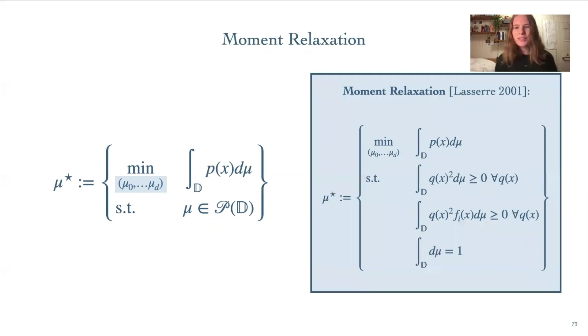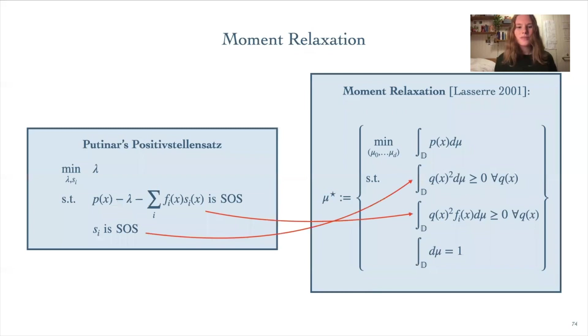Using these facts, we can rewrite our optimization problem like so. This looks a little complex, but it's basically just realizing those two facts in math. We now have the form of Lasserre's moment relaxation. If we form a matrix of our moments, this is just a convex SDP problem and thus easy to solve.